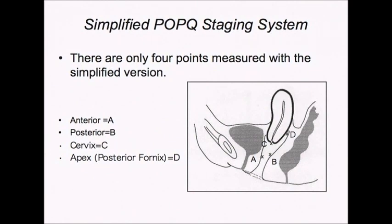The four points to be measured are the anterior vaginal wall, the posterior vaginal wall, the vaginal apex or posterior fornix in the non-hysterectomized patient. The point representing the anterior vaginal wall will be a point at the rugal fold roughly three centimeters proximal to the urethral meatus — point A in this diagram.